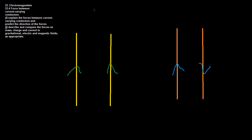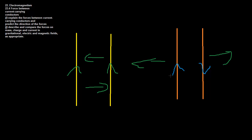When the currents move in the same direction, the two wires will experience a force towards each other — they attract and create a very strong combined magnetic field. When they are moving in opposite directions, they will repel from each other and their magnetic fields will cancel each other out.